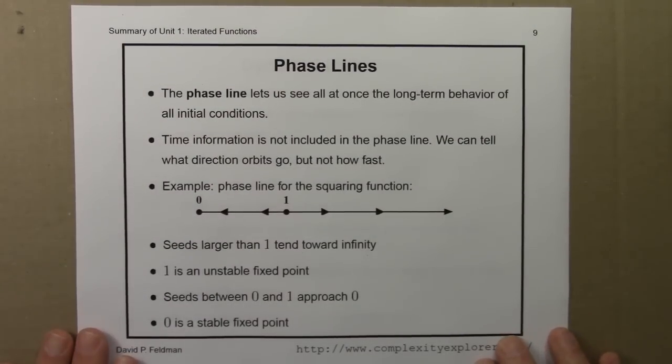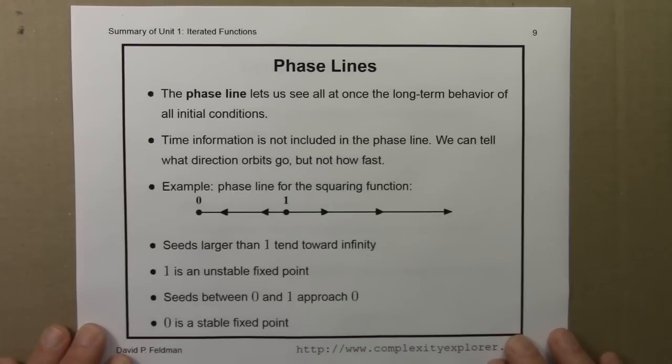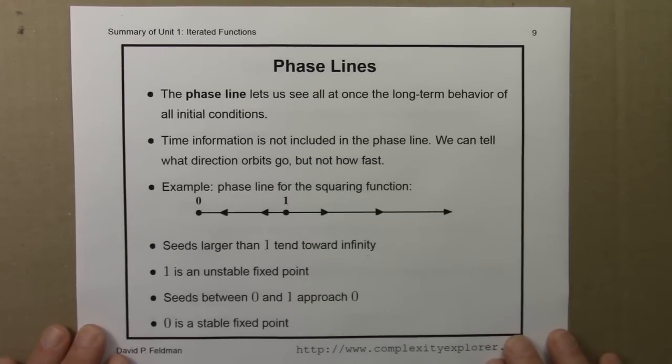The phase line lets us see all at once the behavior of all initial conditions. In a phase line time information is not included. We can tell what direction the orbits go but not how fast they go.